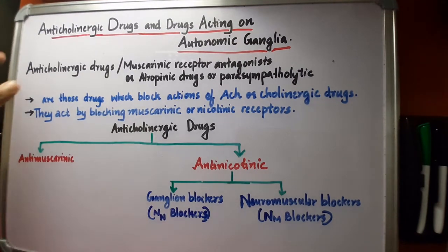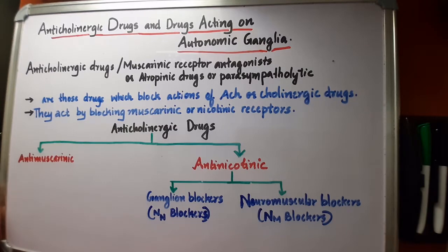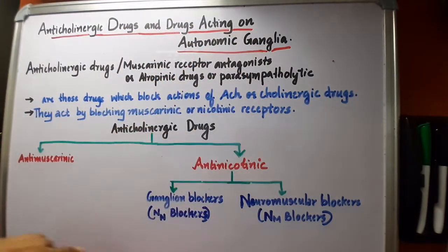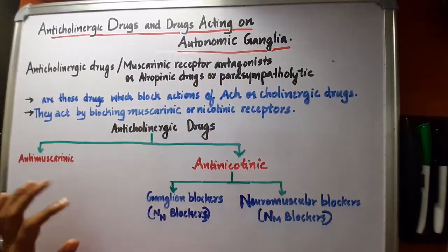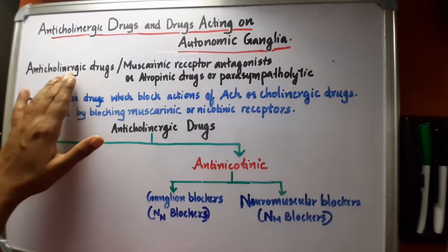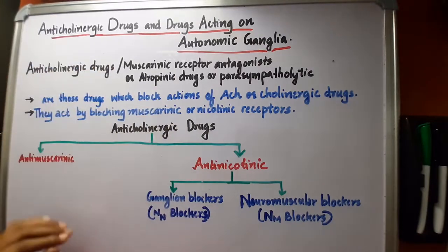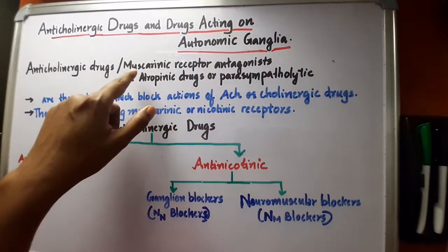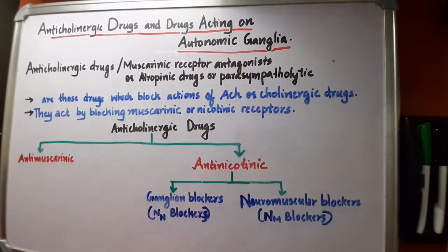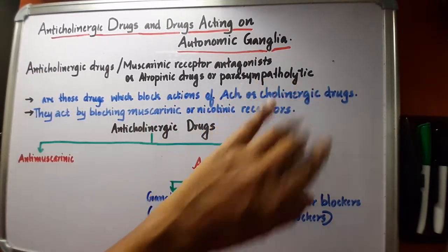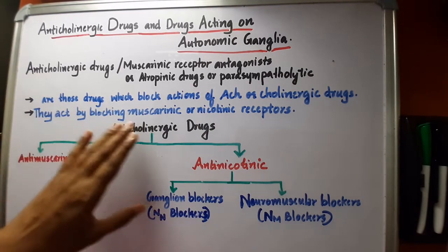Welcome back. Today we are going to study about anticholinergic drugs. Last class we studied about cholinergic drugs, so these are the drugs which act against or oppose the action of cholinergic drugs. Anticholinergic drugs can be called muscarinic receptor antagonists because cholinergic drugs act on muscarinic receptors to produce their action. They are also termed as parasympatholytic or atropinic drugs.